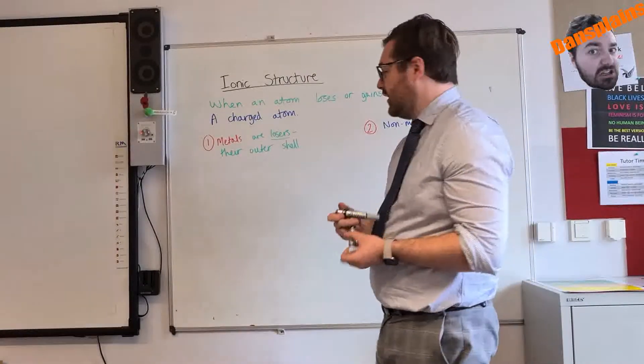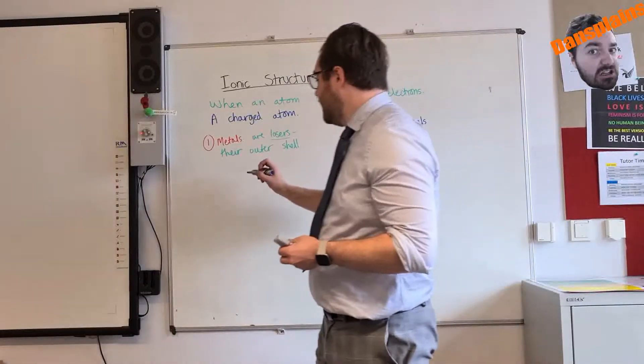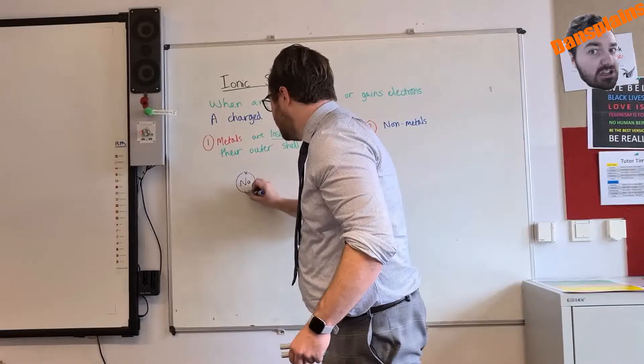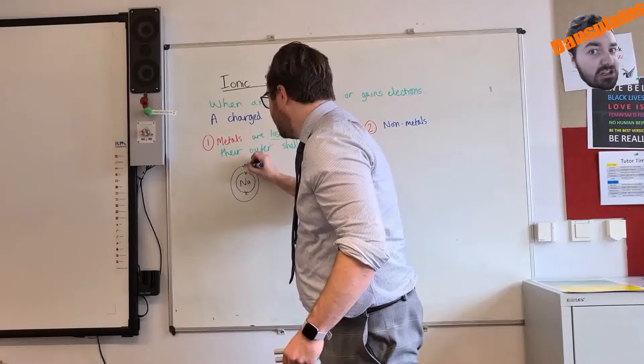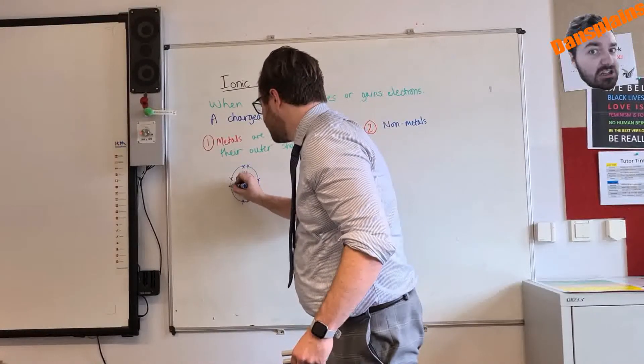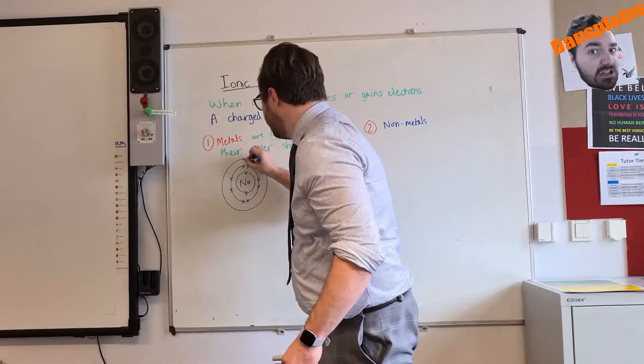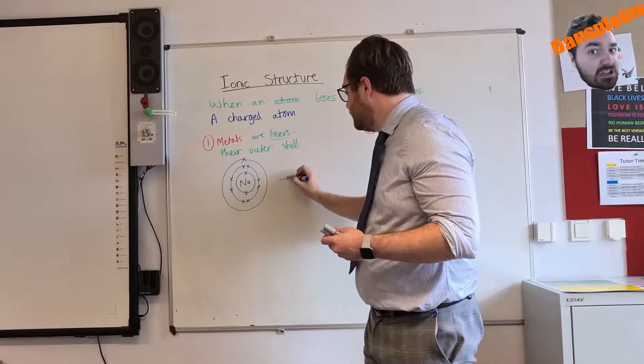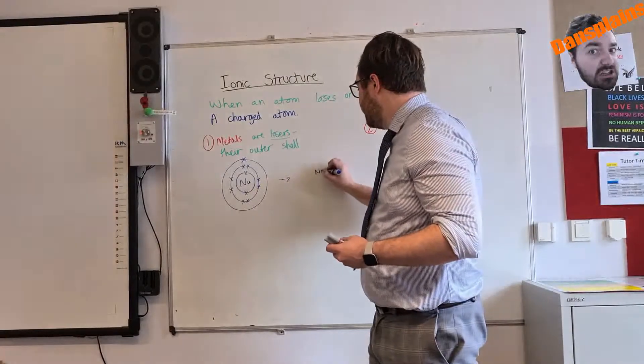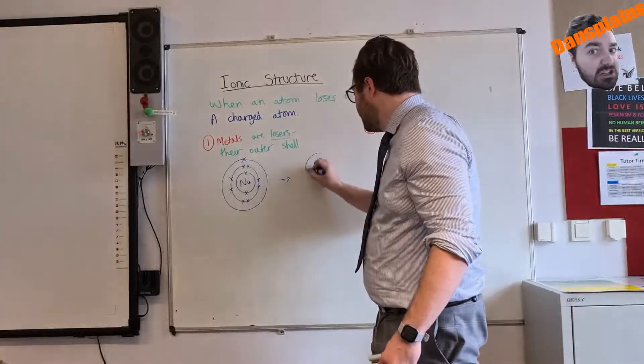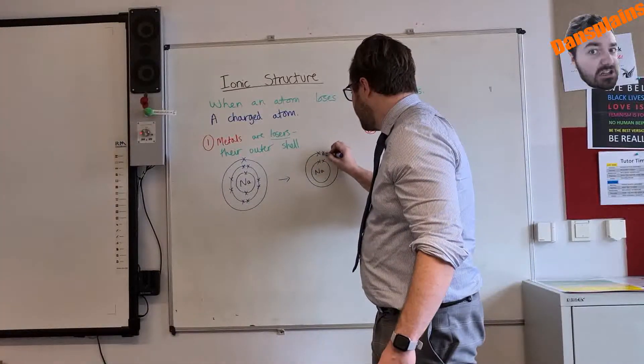Let's just have a look at an example of that. If I have sodium, I'll draw this in very quickly. It is 2, 8, 1. So if it's to lose its outer shell, it will turn into 2, 8.